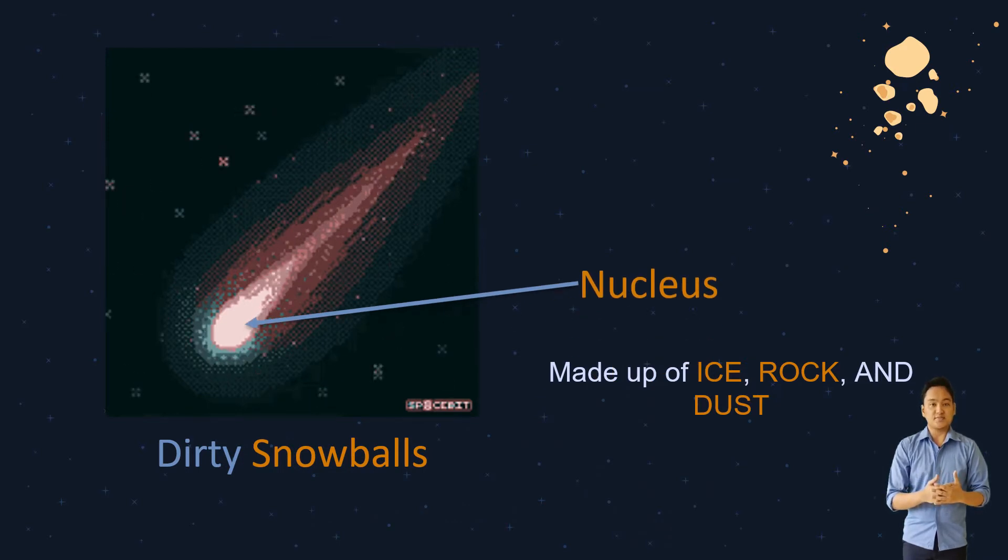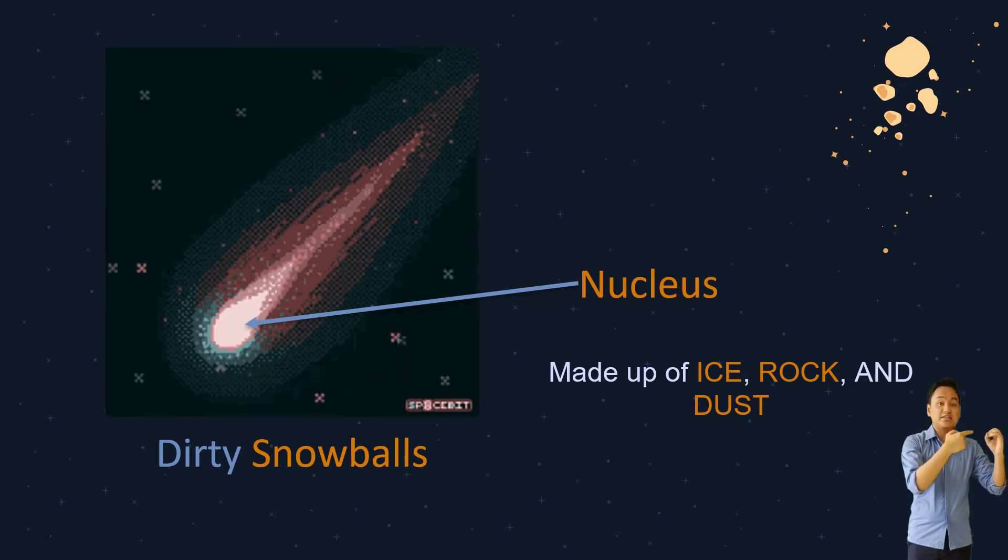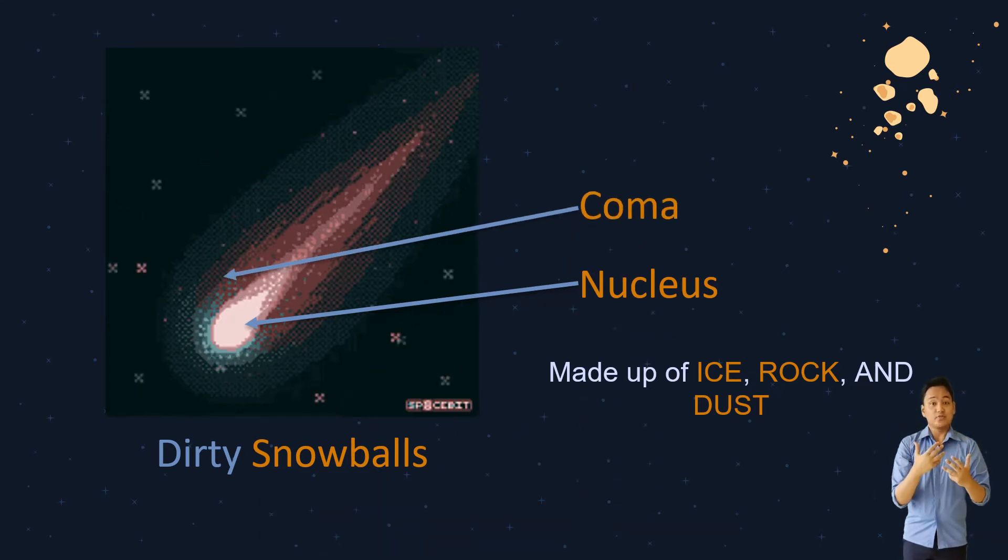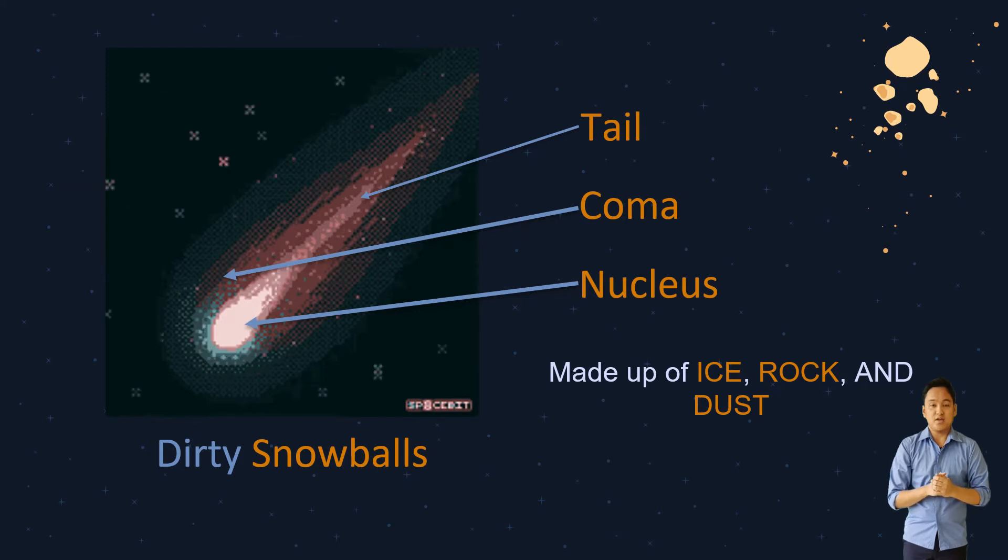The nucleus is made up of ice chunks and frozen gases with dust trapped in them. As the comet starts to move toward the sun, it heats up and the ice starts to vaporize. This forms a cloud around the comet and this is called the coma. A tail also forms as well and the comet's tail is made up of the vaporized ice and dust.